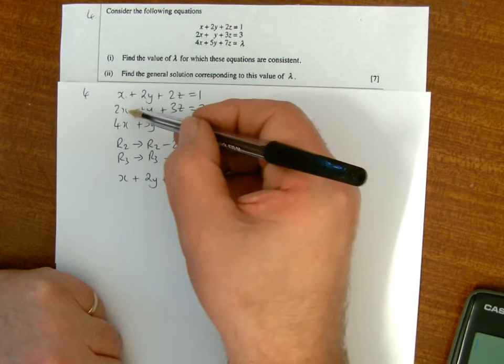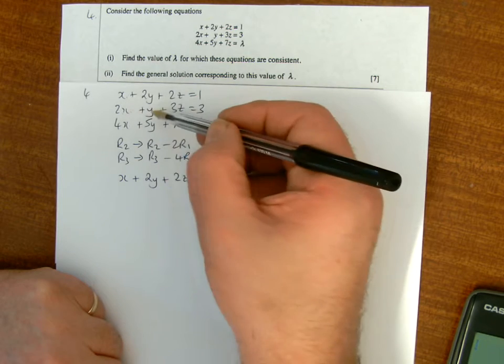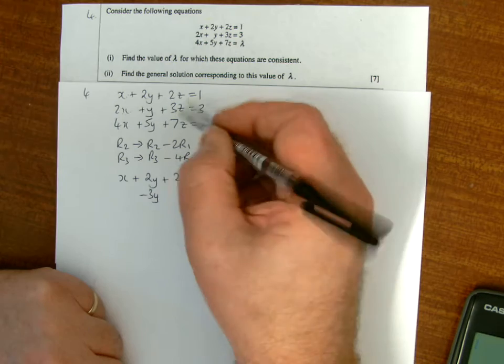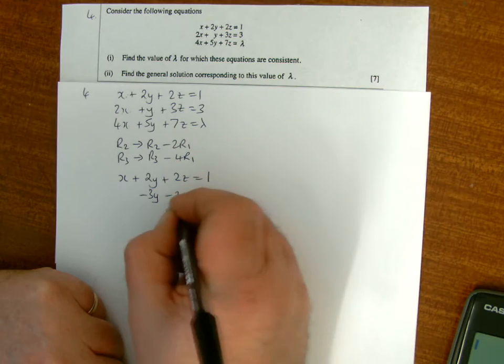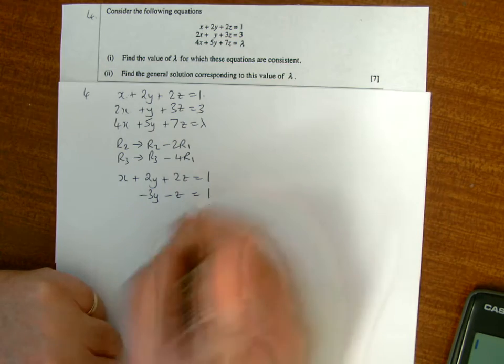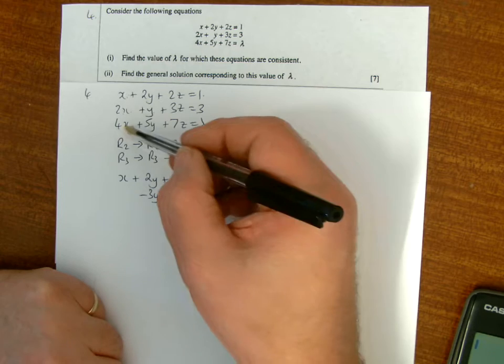So 2x minus 2x is nothing, y take away 4y is minus 3y, 3z take away 4z is minus z, and 3 take away 2 is 1.